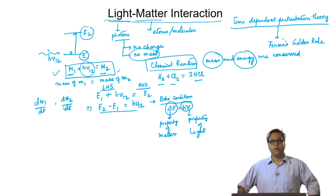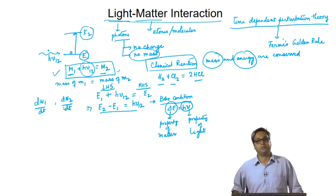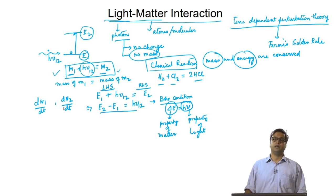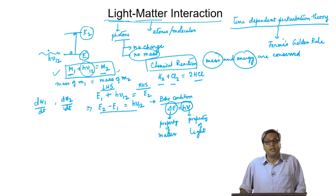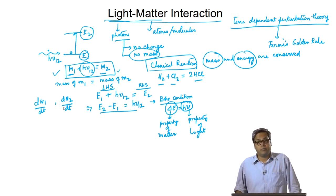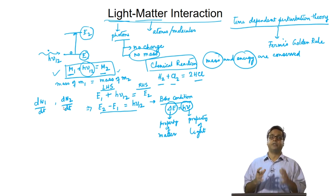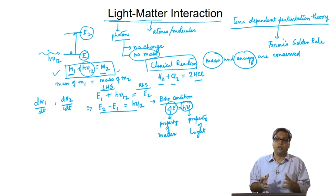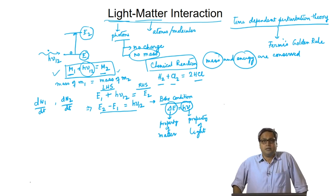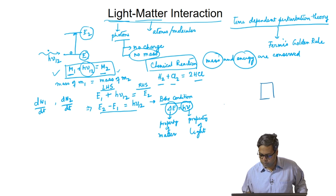For example, when doing a spectroscopic experiment we look from the point of view of light. On the other hand, if we are doing theoretical calculations using quantum mechanics to estimate energy levels of a molecule, we look from the point of view of matter. Because experiments and theory provide complementary information, we can compare our theoretical results with those obtained from experiment. Let us consider light passed through a solution containing a light-absorbing species M.